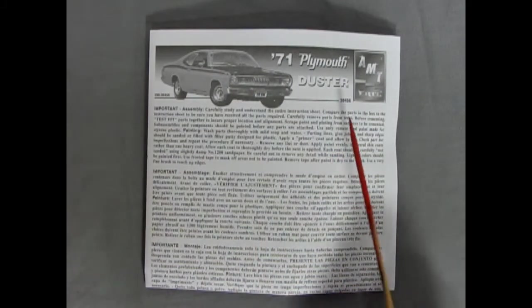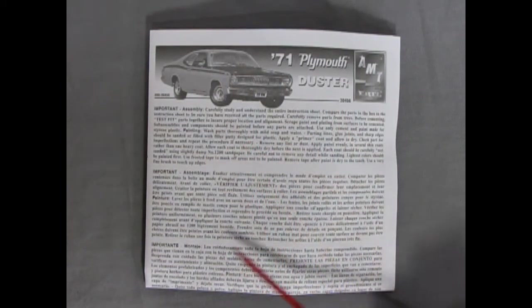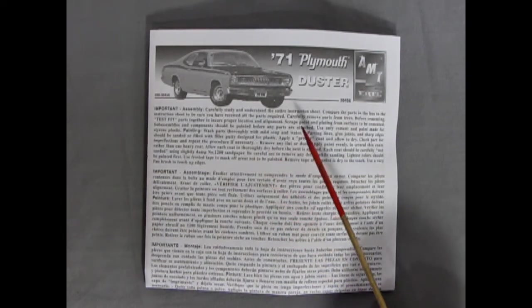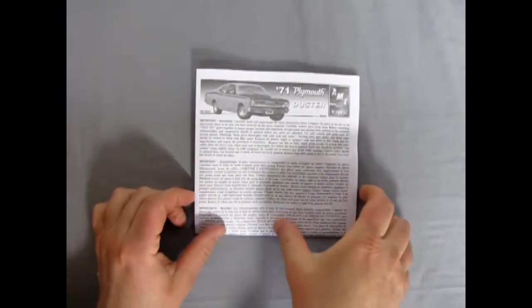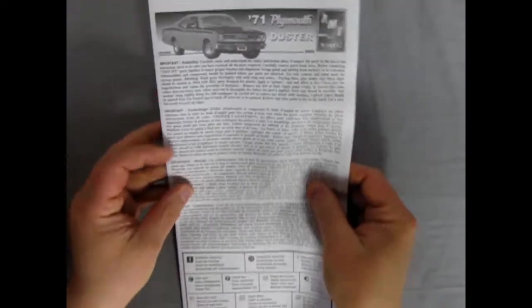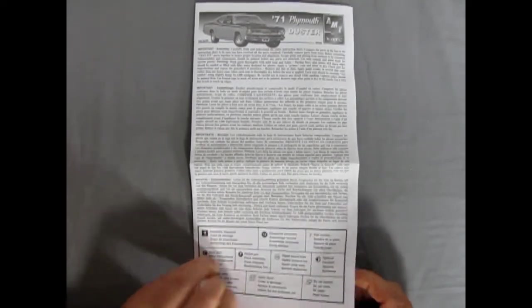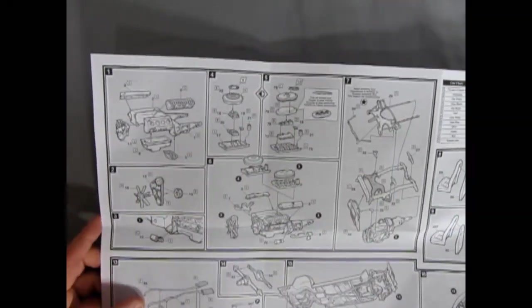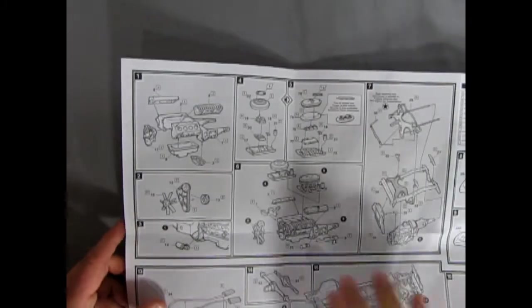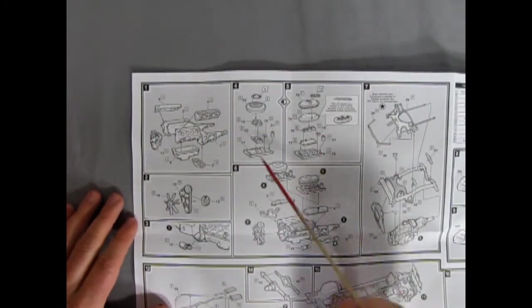Here's our instruction sheet for our 71 Plymouth Duster. Now unfortunately there's no write-up down here so I'm going to have to source that from somewhere else. But if we just zoom out you can see the instruction sheets are pretty long here. So let's get the skinny on this. As we open it up you can see our great 440 here. And you do get an option of actually making this into the six pack 440. So that's really awesome.